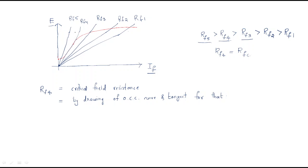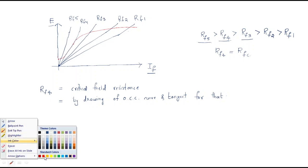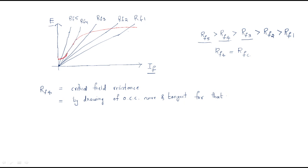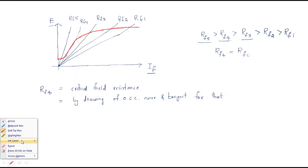The red color line here represents the generated EMF line — this is the most important line. It shows where the EMF will be generated. At this particular line and point only, EMF will be generated.